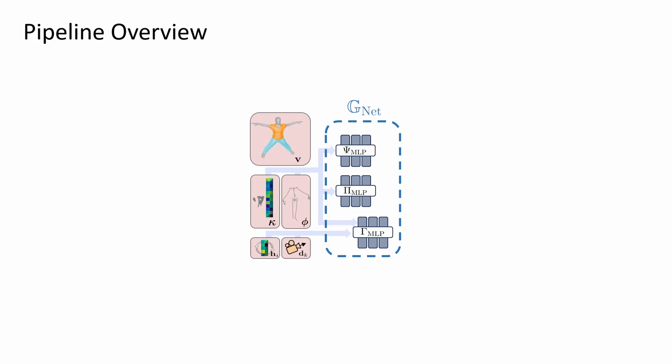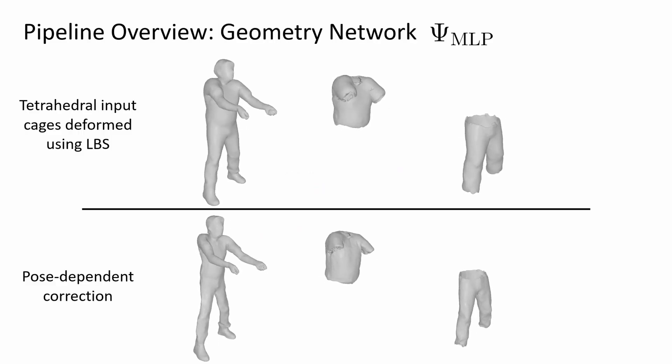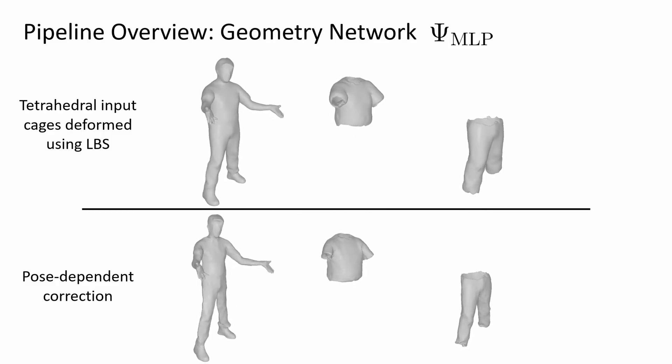The first two networks, Psi and Pi, are responsible for geometric corrections. Based on the motion vector, they predict pose-dependent corrections to cage node positions, as well as Gaussian positions, rotations, and scales. Here you can see the pose-dependent corrective field applied to the input cages, deformed using LBS.